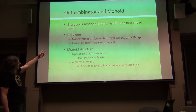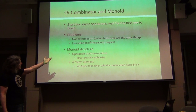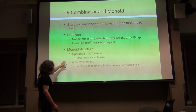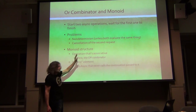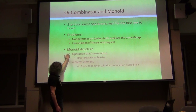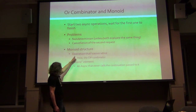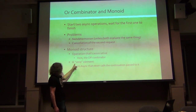The OR combinator is non-deterministic - a race condition problem - and it's implemented using a monoid structure. These problems are there no matter what. We need this operation that's associative - that's the OR combinator.